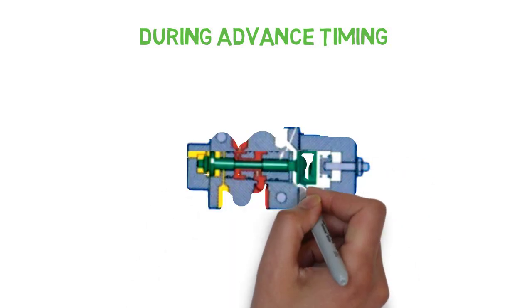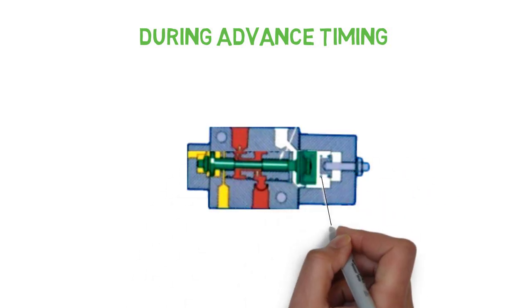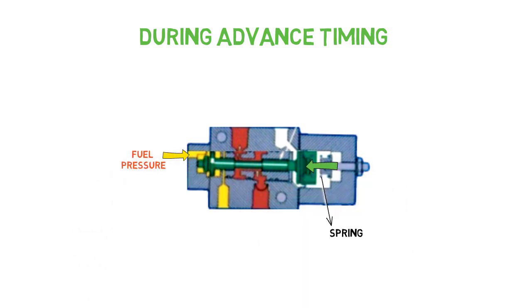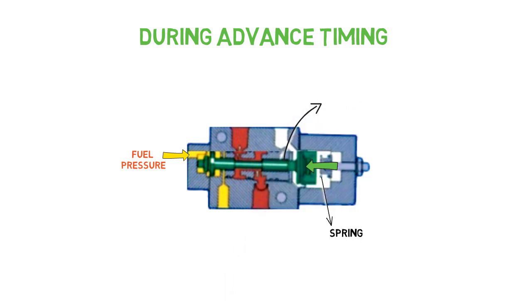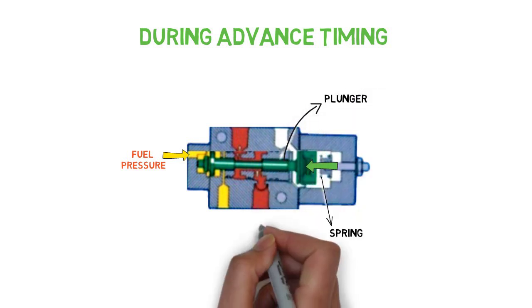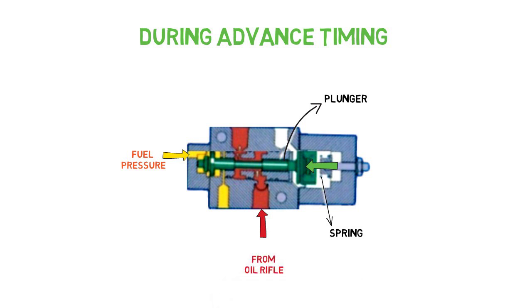During advanced timing, the spring opposes the fuel pressure and holds the plunger in the open position. Pressurized lube oil flows to the tappets and initiates advanced engine timing. The spring holds the plunger in the open position until the fuel pressure reaches above the certified switching pressure.